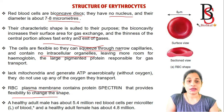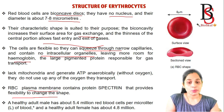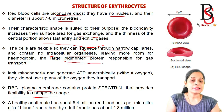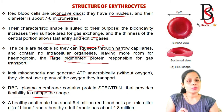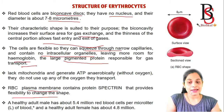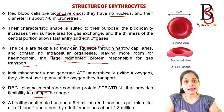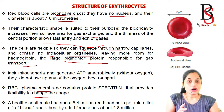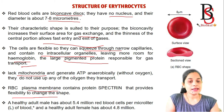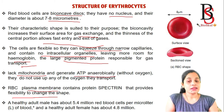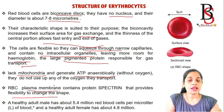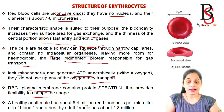Red blood cells have no intracellular organelles, which leaves more room for hemoglobin — a large pigmented protein responsible for the transport of gases. Red blood cells lack mitochondria and generate ATP anaerobically, so they do not use any of the oxygen they transport.